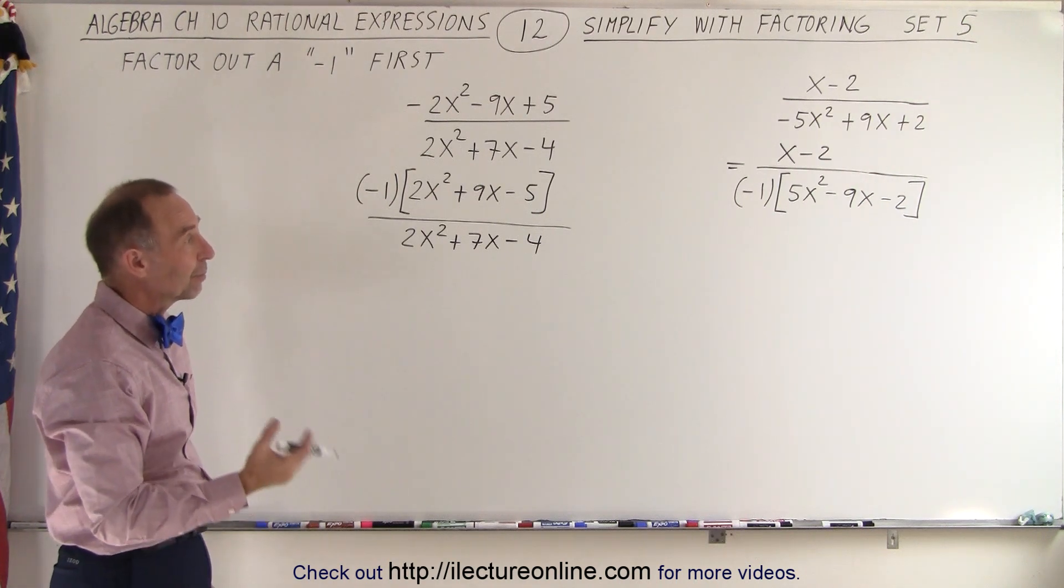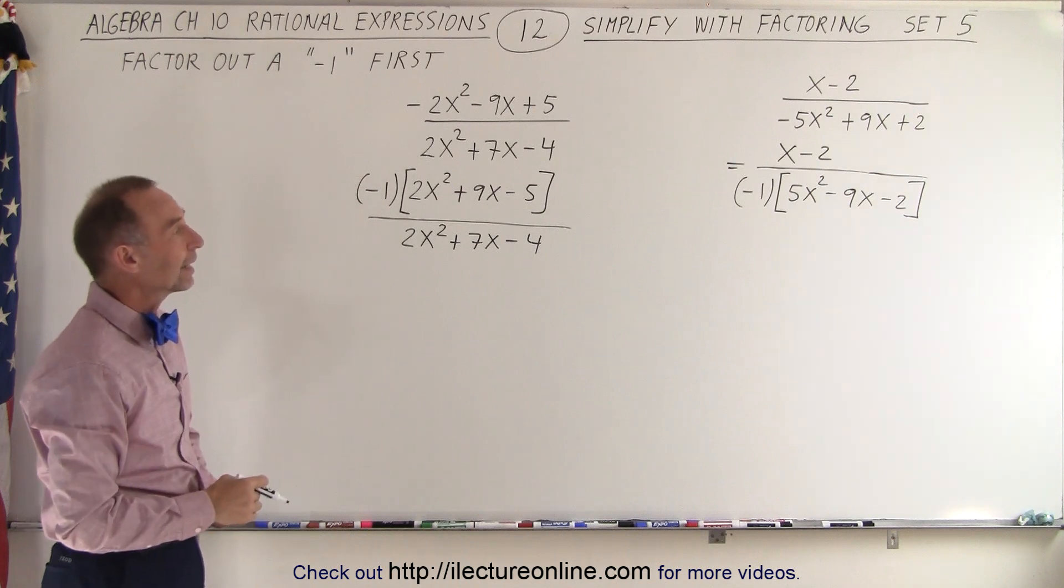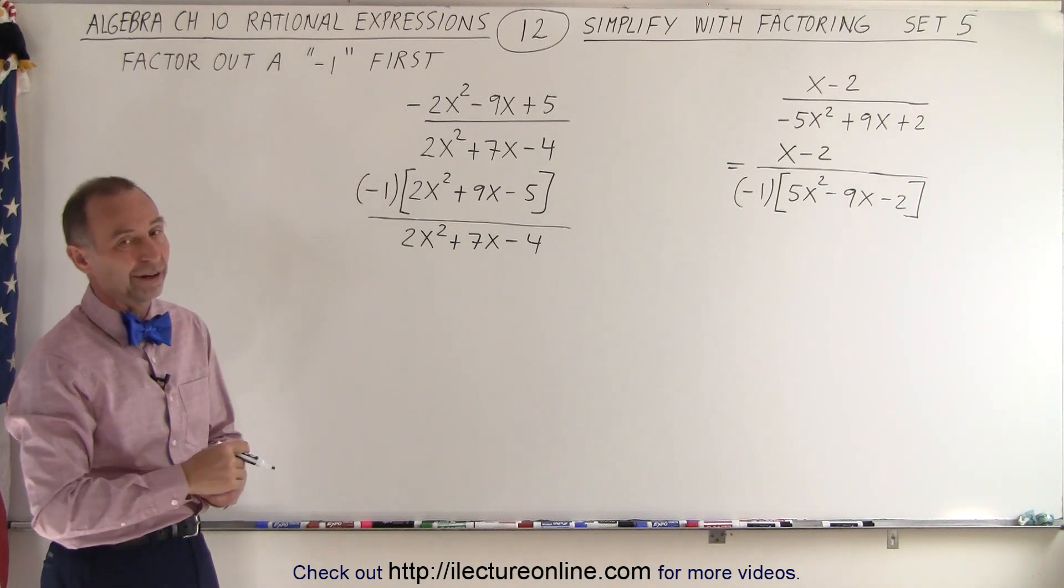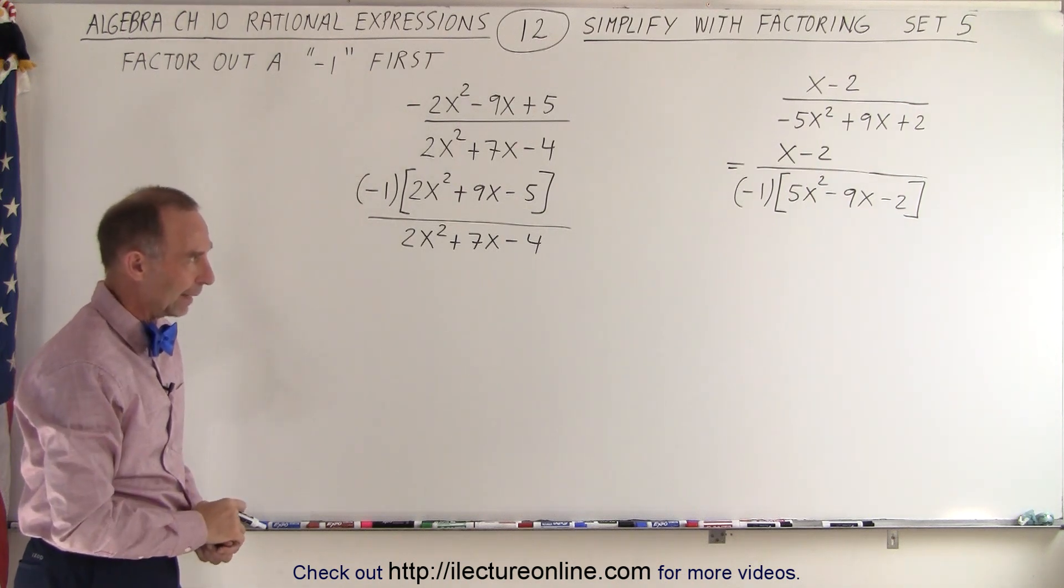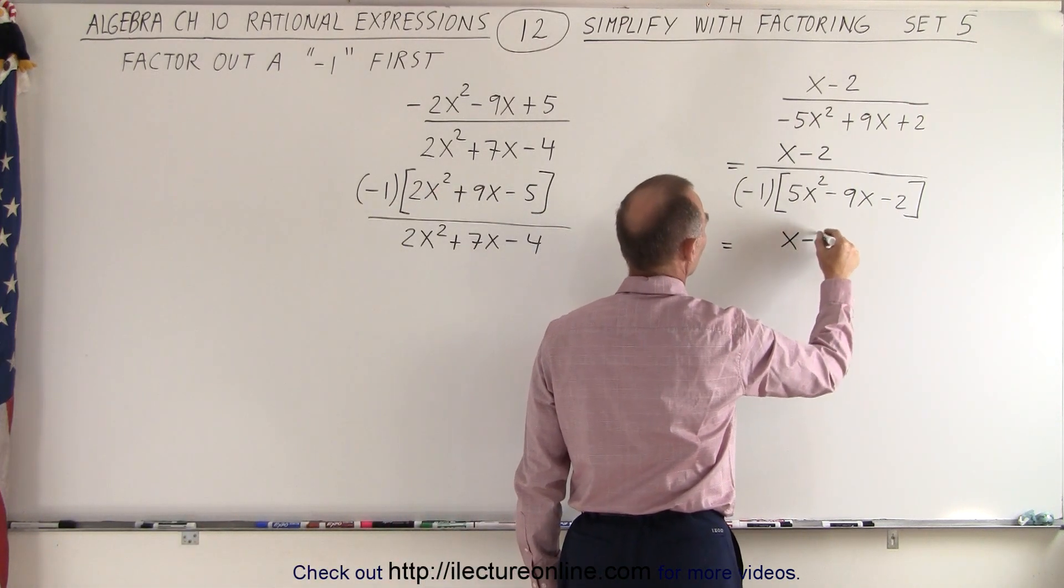Now we do exactly the same as before. We're going to factor what's left. We just keep bringing the negative 1 along, then see what happens at the very end. We could then maybe multiply it back in. So on the right side here, the numerator stays the same, x minus 2.